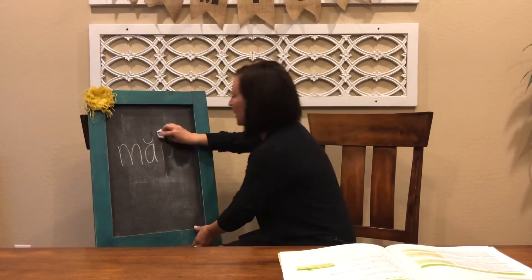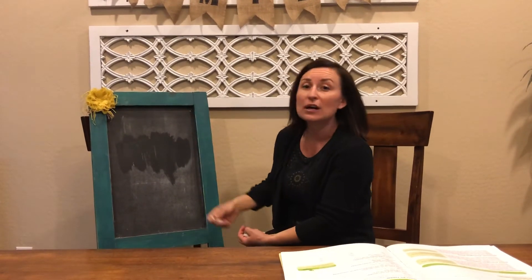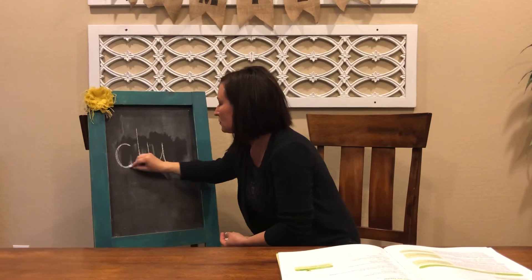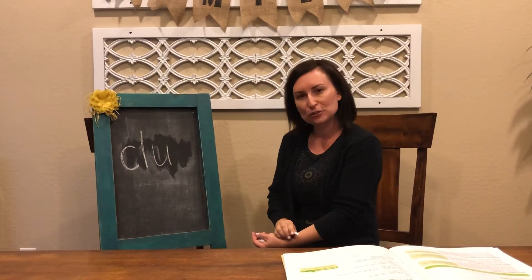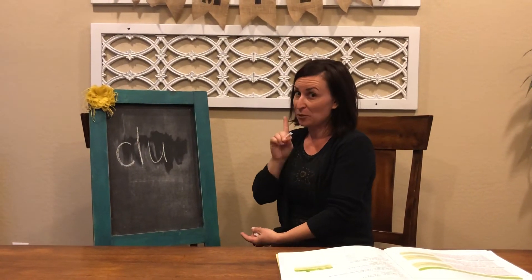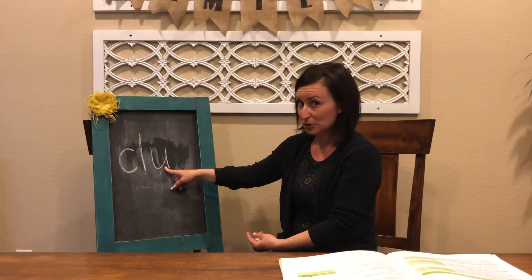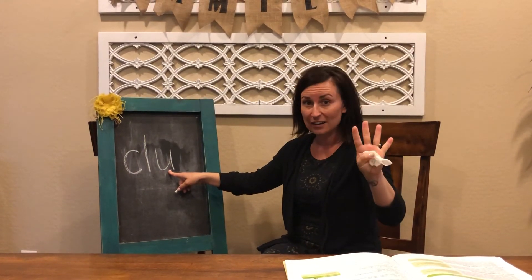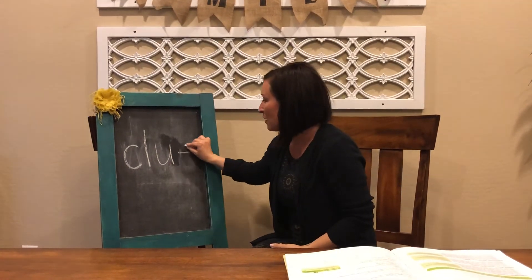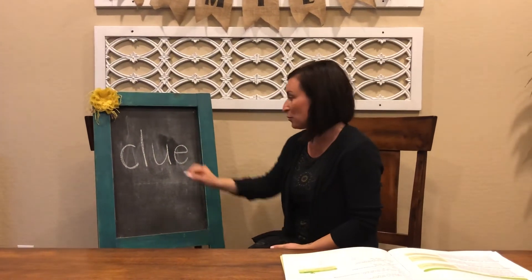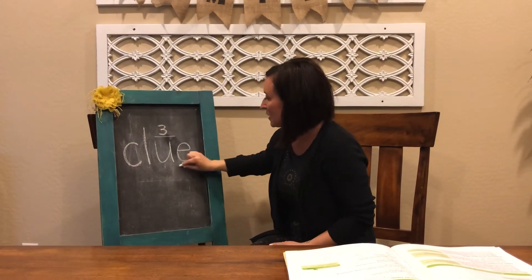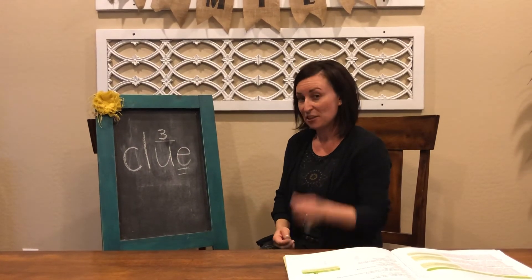Let's do one more — this one's a little tricky. I want to spell the word 'clue'. Clue is a little tricky because I hear the 'ooh' sound at the end of the word. Let's see if I can spell it right. Is this how I spell 'clue'? No. But what do we know about this special vowel or phonogram? This makes the 'ooh' sound when it's long — it makes the third sound. So I'm going to add my silent E at the end, which is going to make this a long vowel sound, and I will also mark it with a three because it makes the third phonogram sound.